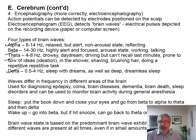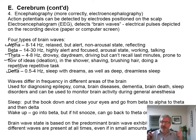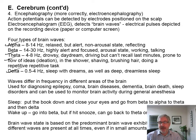Delta — you're deep in sleep. Theta — you're drowsy, you're daydreaming, maybe driving and you can't remember the last minute or two. You're sort of on automatic — you're visually processing things so you kept the car on the road, but you kind of forgot where you were. You're probably in theta there. Alpha — you're relaxed but alert, maybe reflecting, sitting back in your easy chair just thinking about things.